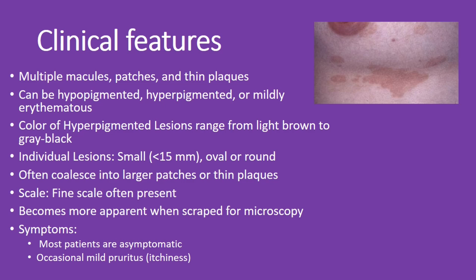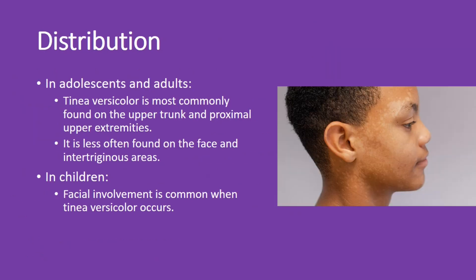Most patients don't have symptoms, but some might experience occasional mild itching. Regarding distribution, in adolescents and adults it's most commonly seen on the upper trunk and proximal upper extremities, like the chest and shoulders. It's less often found on the face or in skin folds. However, in children, facial involvement is quite common when Tinea versicolor occurs.